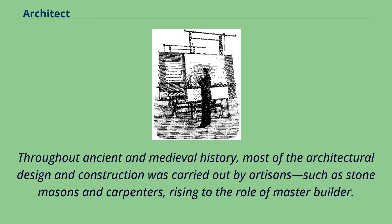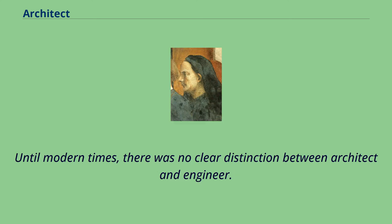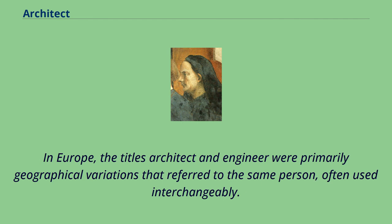Throughout ancient and medieval history, most of the architectural design and construction was carried out by artisans, such as stonemasons and carpenters, rising to the role of master builder. Until modern times, there was no clear distinction between architect and engineer. In Europe, the titles architect and engineer were primarily geographical variations that referred to the same person, often used interchangeably.